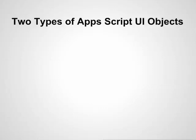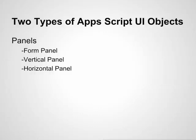UI services in Apps Script consist of two main types of UI objects. First, there are panels. Some examples of panels would be FormPanel, which is a panel that wraps its contents in HTML tags; VerticalPanel, which flows the panel's contents in a vertical layout; and HorizontalPanel, which flows the panel's contents in a horizontal layout. These are only a few examples of the many choices that Google offers. Further detailed documentation on Google Scripts programming for panels can be found here.